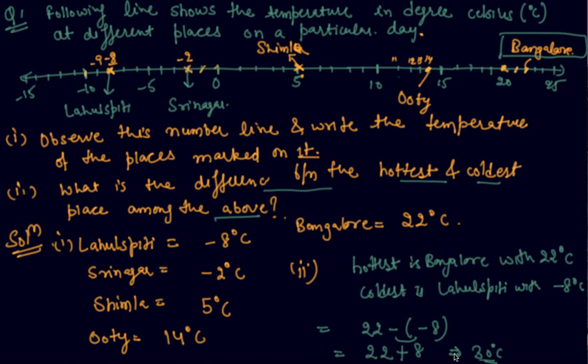And you can also find it by counting on the number line. So counting from -8 to 22, we get 1, 2, 3, 4, 5, 6, 7, 8, 9, 10, 11, 12, 13, 14, 15, 16, 17, 18, 19, 20, 21, 22, 23, 24, 25, 26, 27, 28, 29, 30. So the difference between these two temperatures would be 30 degrees Celsius.